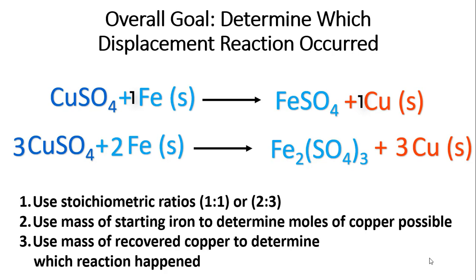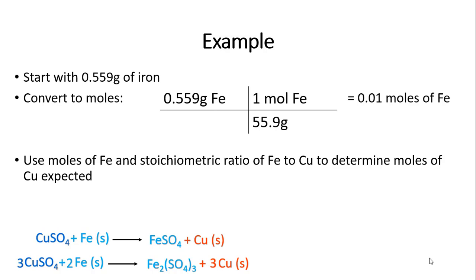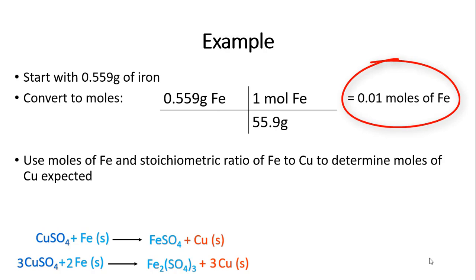We can use those ratios to determine the number of moles of copper possible, and then once we do the reaction we can weigh the copper to see which reaction actually happened. Here's an example: I start with 0.559 grams of iron. I convert that into moles by dividing by the molar mass — 55.9 grams per mole — and I get 0.01 moles of iron.